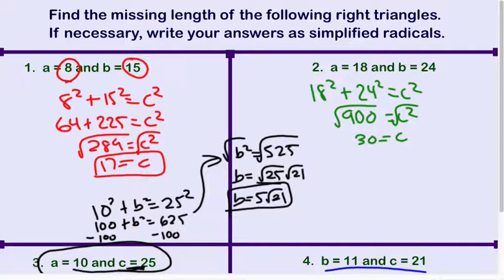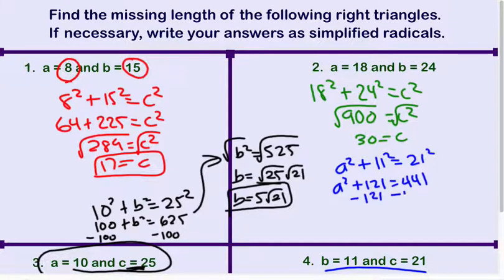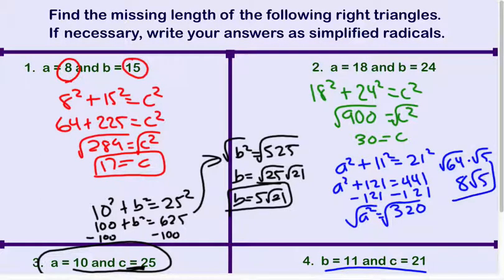So for number 4, A squared plus 11 squared equals 21 squared. 11 squared is 121, 21 squared is 441. So I'll subtract 121. A squared equals 320. Again, this will not be a perfect square root. When I square root, 320 can be split up into 64 and 5. So I get square root of 64 times square root of 5. So my answer is 8 square root of 5.